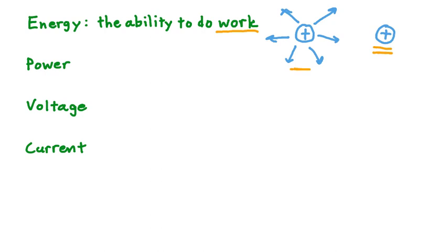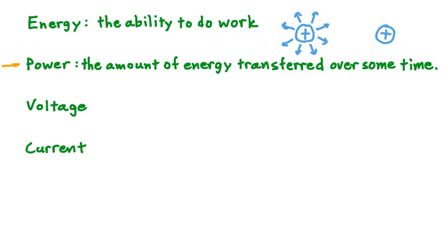To do this, it takes work, and that work is a measure of the energy invested in the process. Moving on, let's now recall the definition for power. Power is defined as the amount of energy transferred over some amount of time. Written as an equation, we can say that power P is equal to energy E divided by time T.